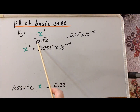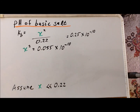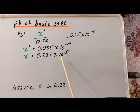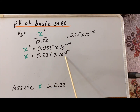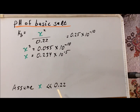We multiply each side by 0.22, and then we solve by taking the square root of each side. Solving, we have that X is equal to 0.234 times 10 to the minus 5, or 2.34 times 10 to the minus 6. Our value of X is 5 orders of magnitude smaller than 0.22. Typically this will be a valid approximation if X is less than 5% of the larger value, so here it is much, much smaller, showing that we have made a valid assumption.